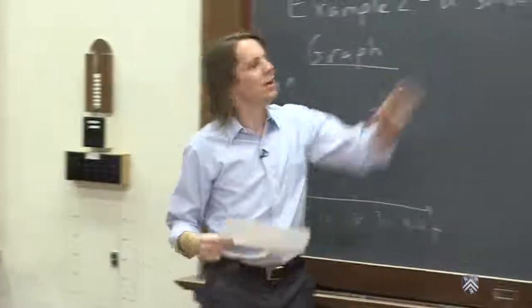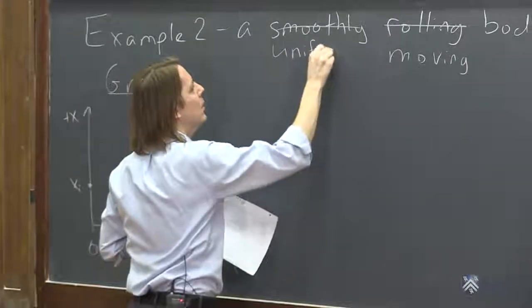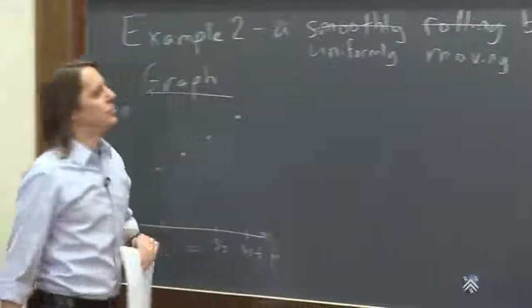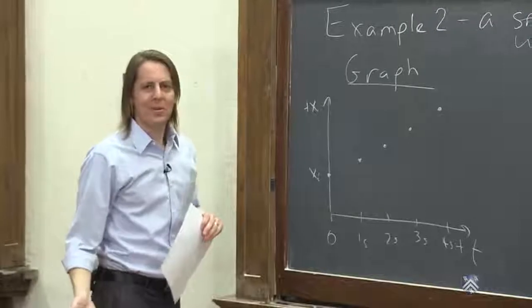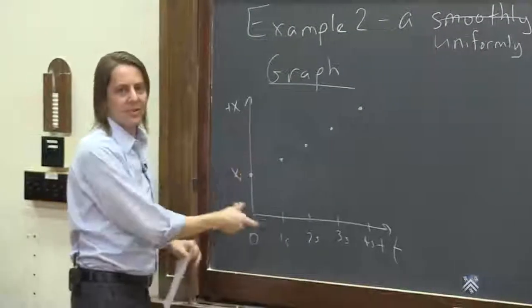And when we say smoothly, we kind of mean more accurate might be uniformly. Might be a more descriptive word. So if it's moving uniformly, that basically just means it's going about the same amount of distance x in the same amount of time.